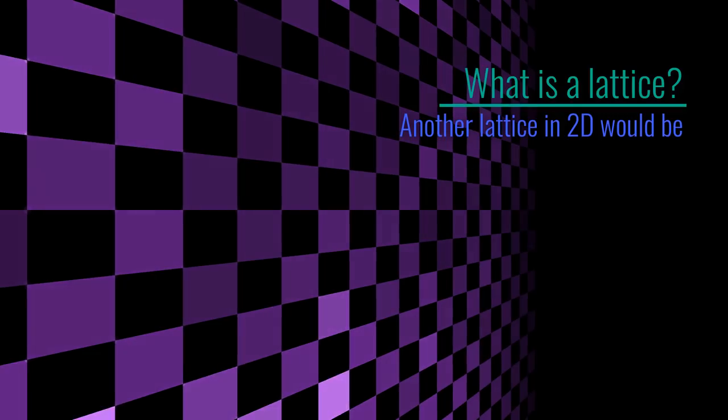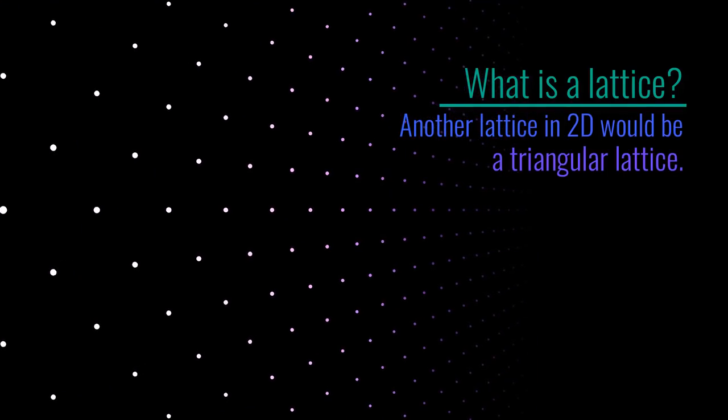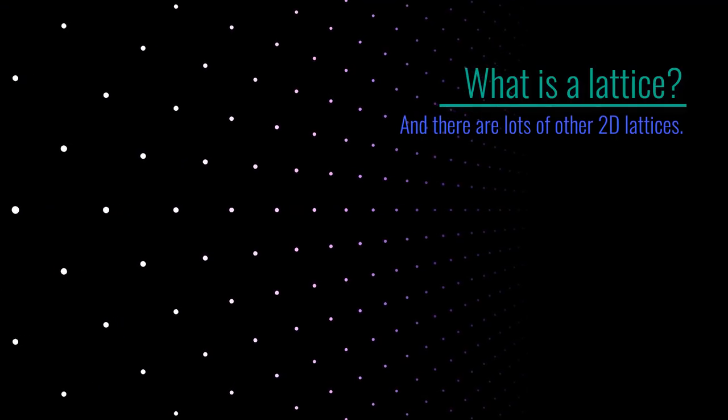Another lattice in two dimensions would be a triangular lattice where you arrange them at the vertices of an equilateral triangle, and there are lots of other two-dimensional lattices.